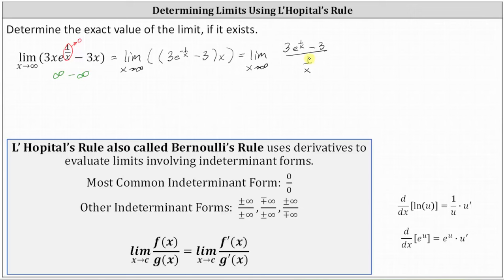Now let's see what's happening to the function in this form as x approaches infinity. We know e to the power of one divided by x is approaching one as x approaches infinity, which indicates the numerator is approaching three minus three, or zero. And the denominator of one divided by x is also approaching zero as x approaches infinity. So now we do have the indeterminate form in which we can apply L'Hôpital's rule to help us determine the limit.